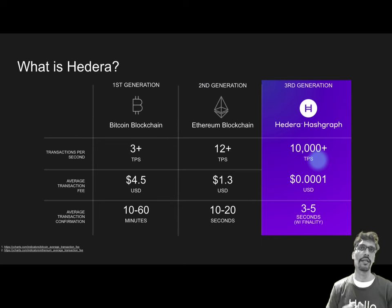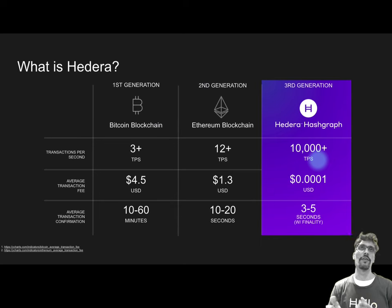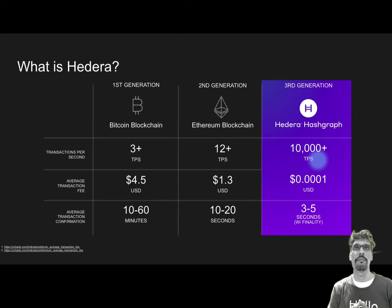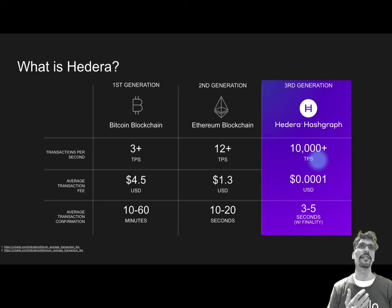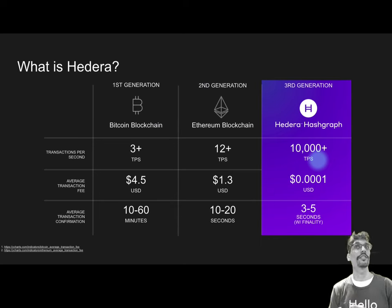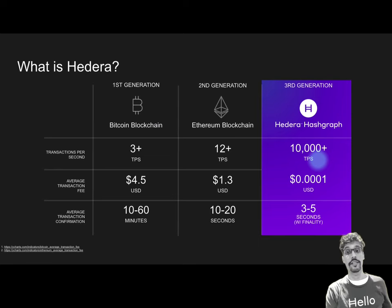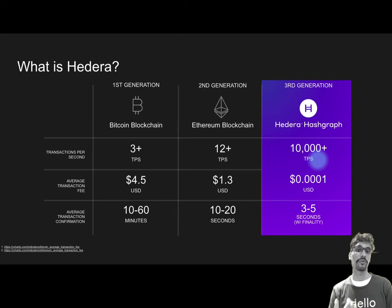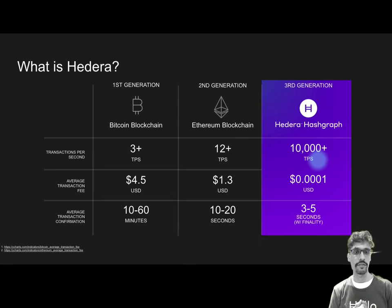Hedera does what Bitcoin and Ethereum have done but adds more. Instead of a blockchain under the hood, it uses a more efficient data structure called a hashgraph, invented by Hedera's co-founder. A common question is whether Hedera and hashgraph are the same — the nuanced answer is that hashgraph is the consensus algorithm and Hedera is the DLT built on top of it. This gives higher throughput of 10,000 transactions per second, latency of 2 seconds versus 15 seconds for Ethereum and 10 minutes for Bitcoin, and very low transaction fees.